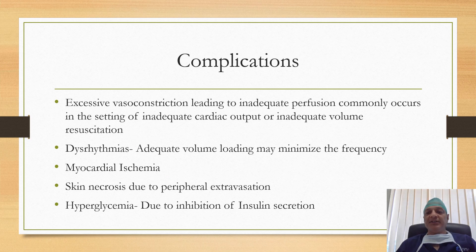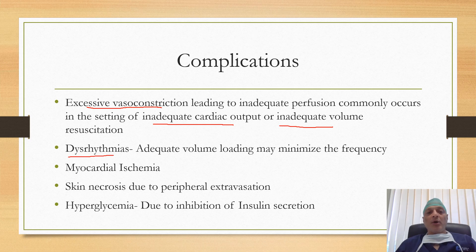Regarding complications of these agents: excessive vasoconstriction can lead to inadequate perfusion and commonly occurs in patients with inadequate cardiac output or inadequate volume resuscitation. Other complications include dysrhythmia, myocardial ischemia, and skin necrosis due to peripheral extravasation. Hyperglycemia can also occur because of inhibition of insulin secretion.